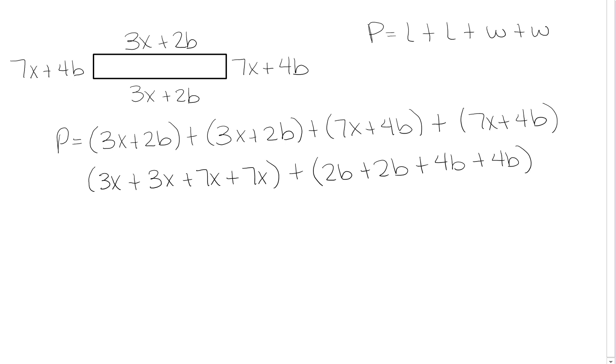So now everything that looks the same is together. So I want to add. I have 3 plus 7, which is 10, and another 3 plus 7, which is 10. So 10 plus 10 is 20. I've got 20x's. And then here I've got 4 plus 2 is 6, and another 4 plus 2 is 6, and 6 plus 6 is 12. So I'm going to add 12b.